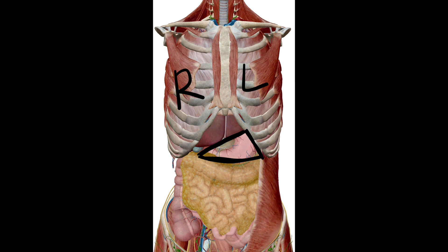Now let's see the clinical significance of gastric triangle. In complete esophageal obstruction, food cannot pass to the stomach through the esophagus. So in order to feed the patient, gastrostomy is done, and gastrostomy is done in this triangular area. This is the clinical significance of gastric triangle.